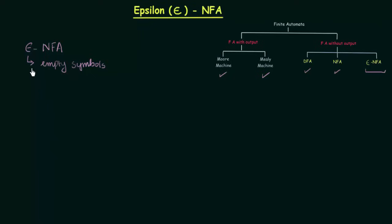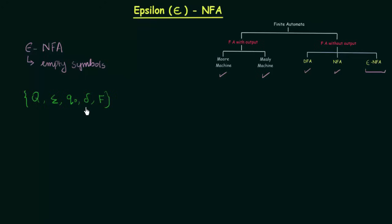Let us see how we define Epsilon NFA. Our regular NFA was defined using five tuples: q, sigma, q0, del, and f — where q is the set of states, sigma is the inputs, q0 is the initial state, del is the transition function, and f is the set of final states. Even in Epsilon NFA, these same five tuples are used.